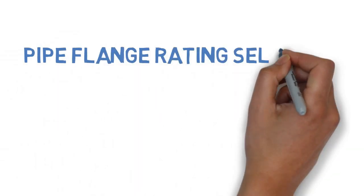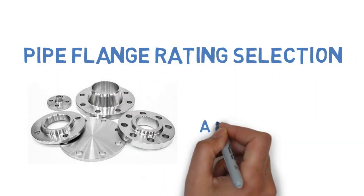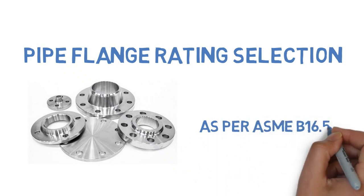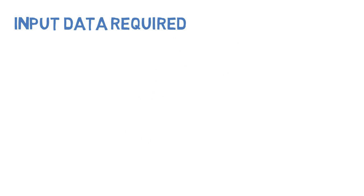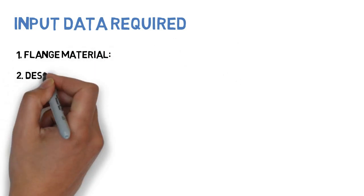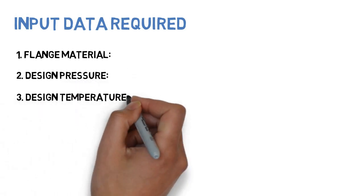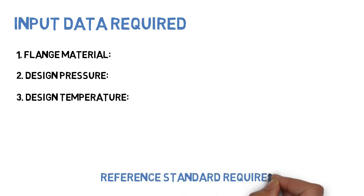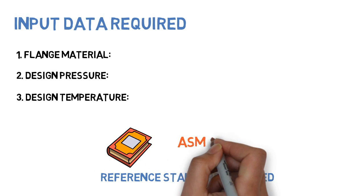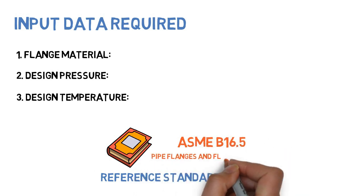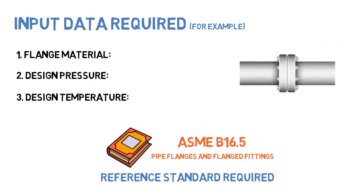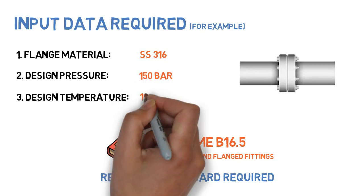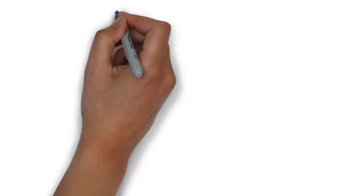For pipe flange rating selection as per ASME B16.5, the following input data are required: flange material, design pressure, design temperature, and reference standard ASME B16.5. Let us consider the following example: flange material SS 316, design pressure 150 bar, design temperature 120 degrees Celsius.